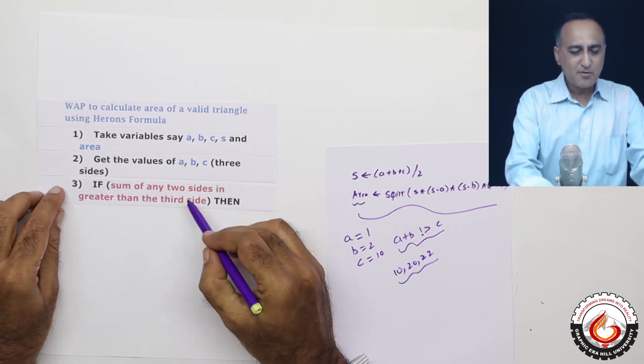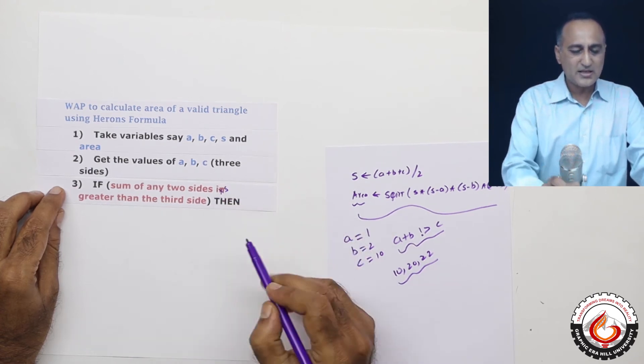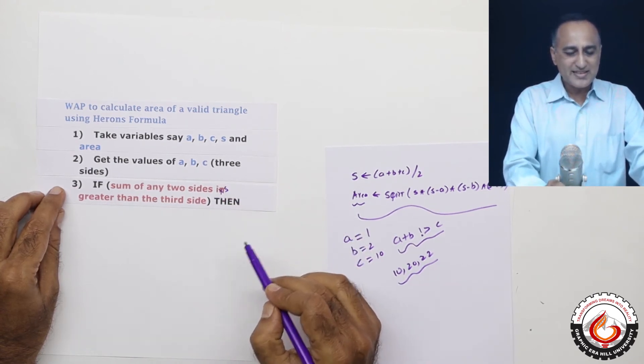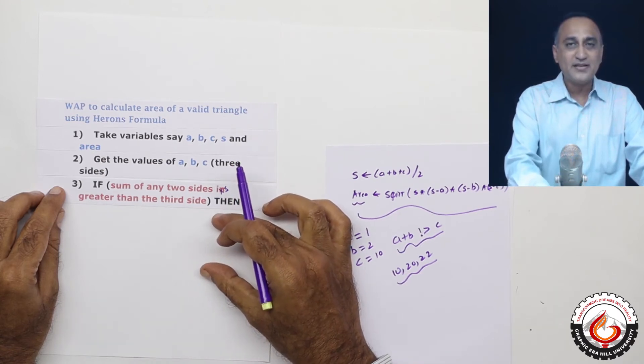So high level logic says, if the sum of any two sides is greater than the third side, then only I am going to calculate the area.